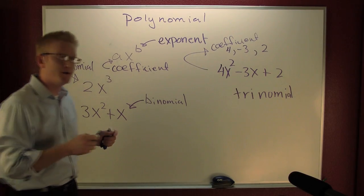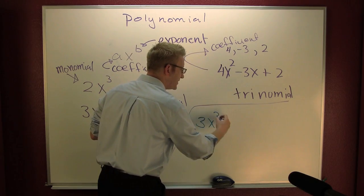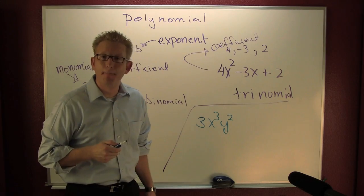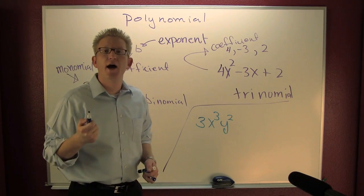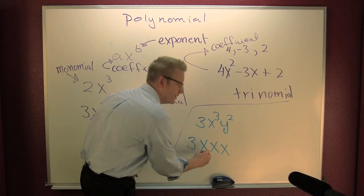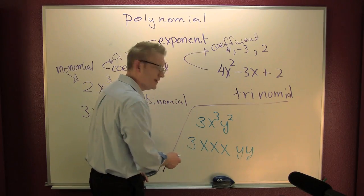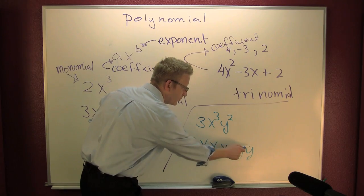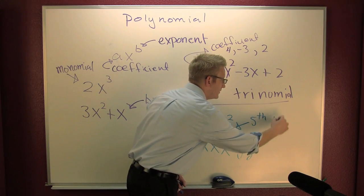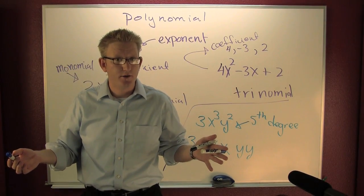What if your terms have mixed variable parts? What if you had something like three x to the third y squared? I want to know what the degree of that monomial is. When you think of degrees, think of how many places there are to put variables. There are three x's and two y's. So the degree of this is one, two, three, four, five — this is a fifth degree monomial. And that's about all I have to say about the introduction to polynomials.